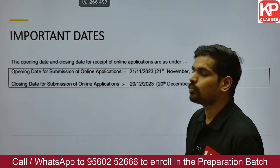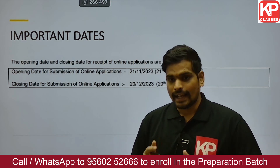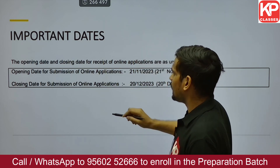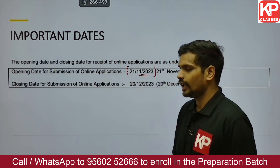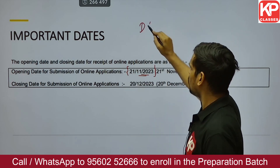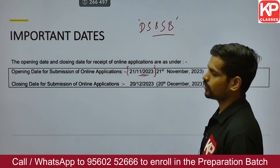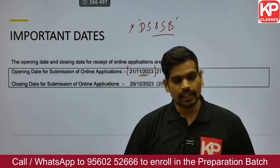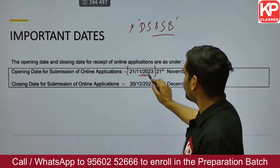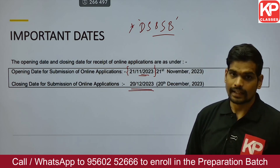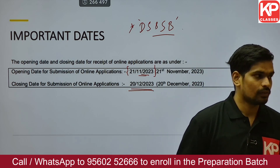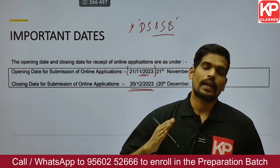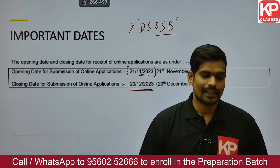Now let us look into the important dates. By the time you are watching this video, the application window is already live and still open. The opening date for submission of the online application is 21st November, and the closing date is 20th December. You need to go to the portal of DSSSB — not the NDMC portal — to apply. Don't wait till the last moment; make sure you apply well before 20th December.